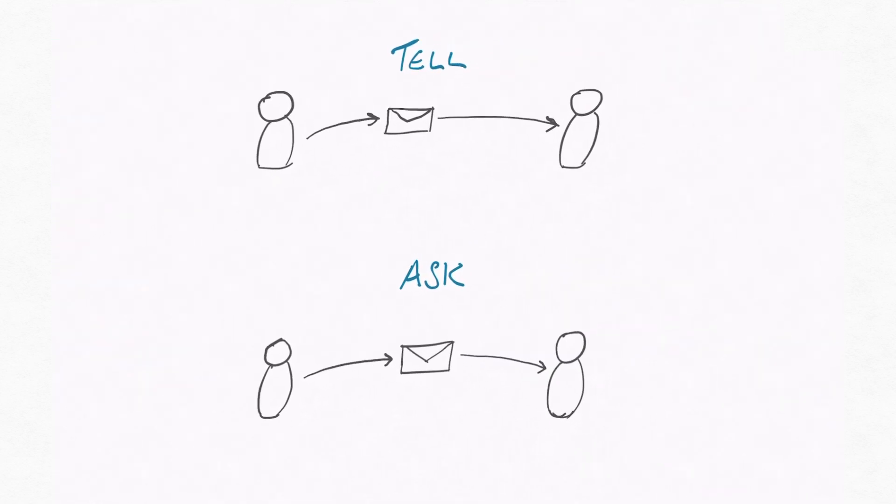There's two types of message patterns you can use: Tell and Ask. Telling an actor something involves sending a message to them in a fire and forget approach. Asking an actor something, on the other hand, involves sending a message and then waiting for the target actor to respond.